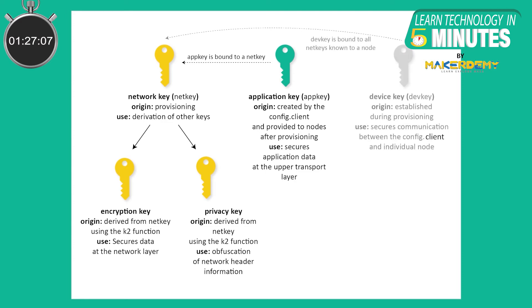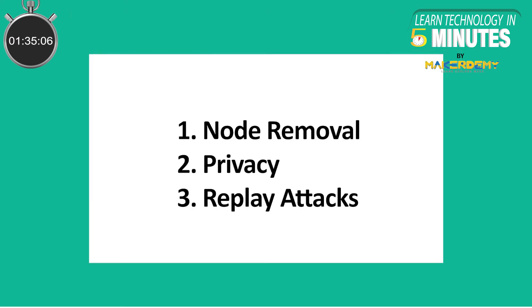The third key type is the Device Key. This is a device-specific key that is used during the provisioning process for securing communication between the unprovisioned device and the provisioner.